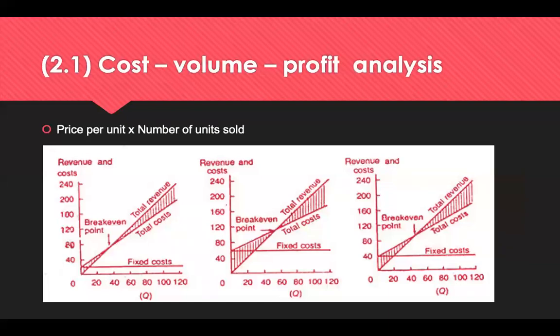Cost-volume-profit (CVP) analysis is a method that looks at the impact that varying levels of costs and volumes have on operating profit. It determines the breakeven point at different sales volumes and cost structures, making a number of assumptions — including that the sales price and the fixed and variable costs are constant. Running this analysis involves using several equations for price, cost and other variables. In this example, we can see the changes that occur when cost on the y-axis or quantity on the x-axis are changed.